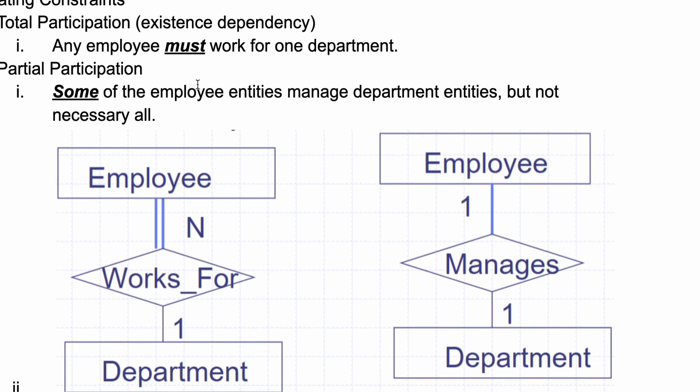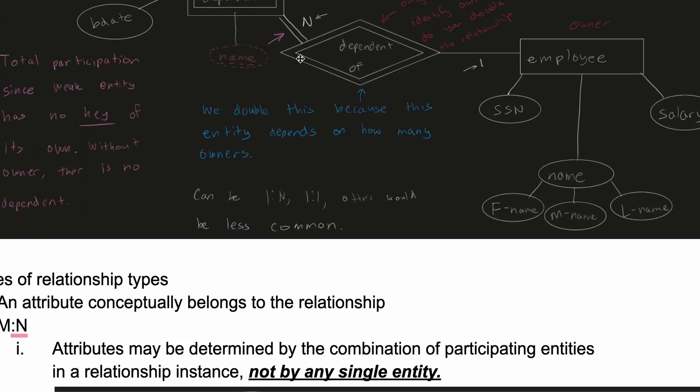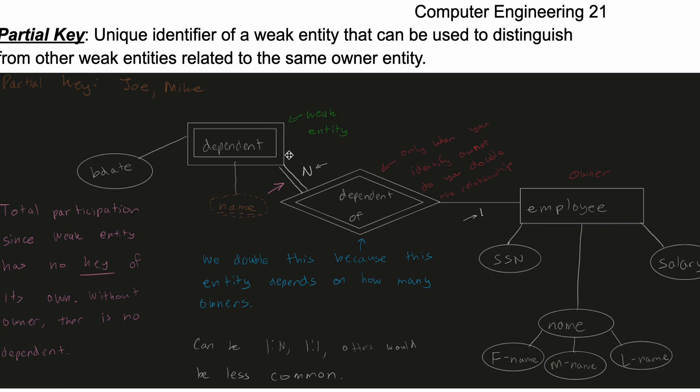We have total participation, which is existence dependency. Any employee must work for one department, and so our dependents must be dependents of our employee. That's where that comes from.